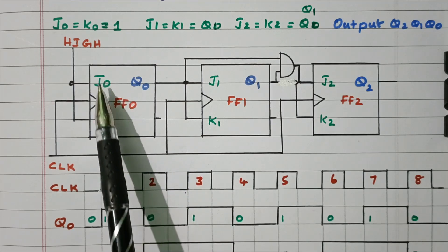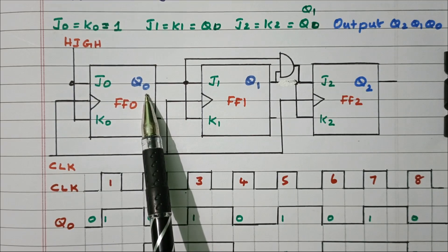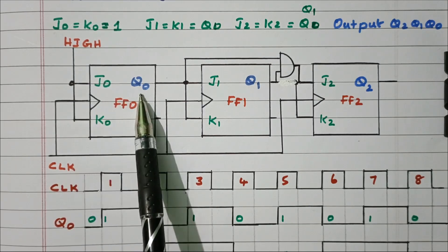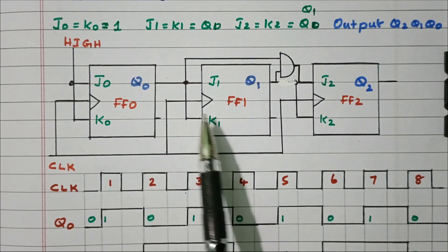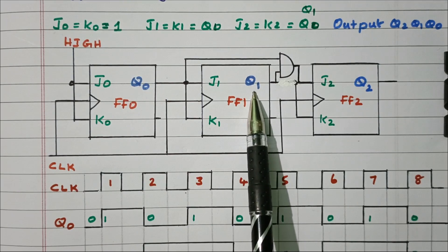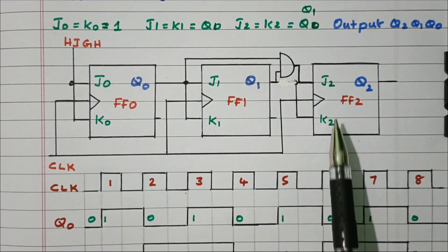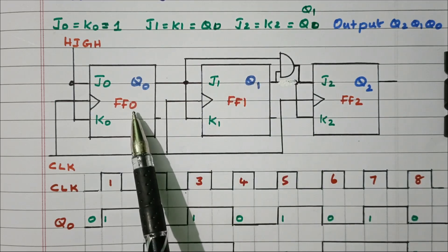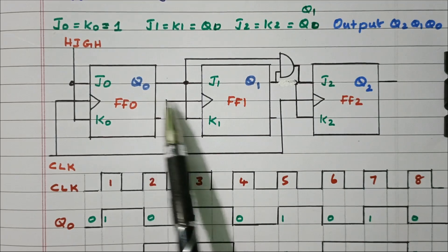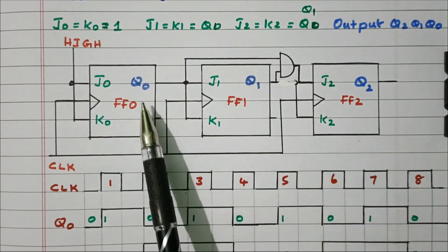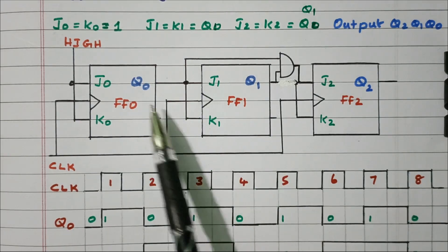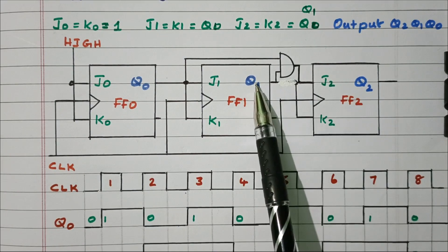To summarize: if both J and K inputs are high, the output will toggle. For the first flip-flop, J0 and K0 are always connected with logic high, so for every clock pulse Q0 will toggle. The second flip-flop has Q0 as its input — whenever Q0 is 1, the output Q1 will toggle. For the third flip-flop, J2 and K2 are connected through an AND gate with Q1 and Q0; only when both Q1 and Q0 are 1 will the AND gate produce a high output and Q2 will toggle.